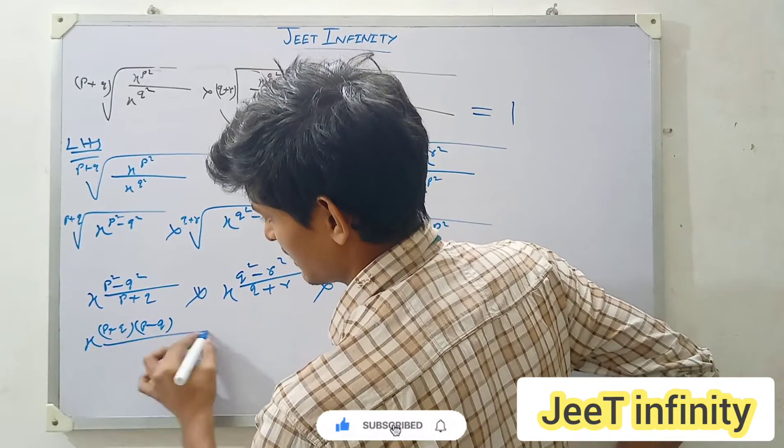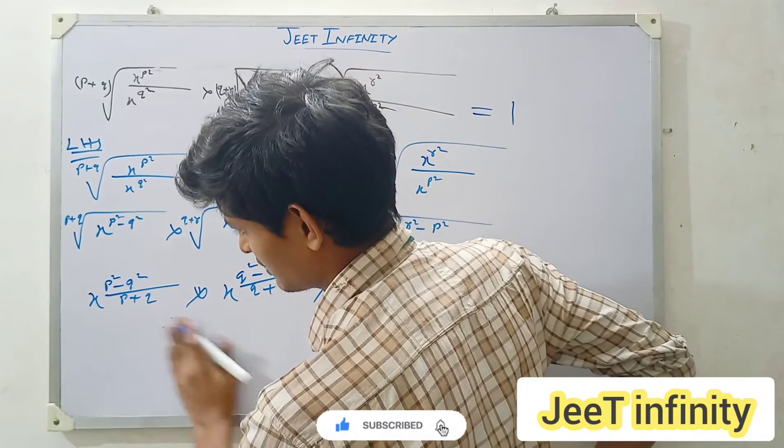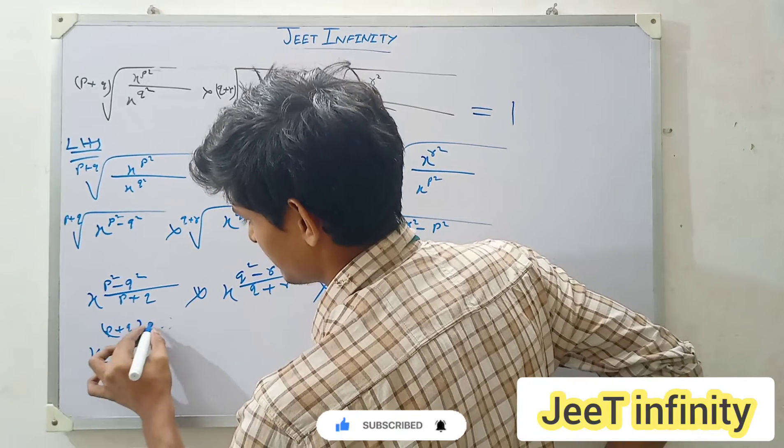(p minus q) over again x to the power (p plus q) and (p minus q).